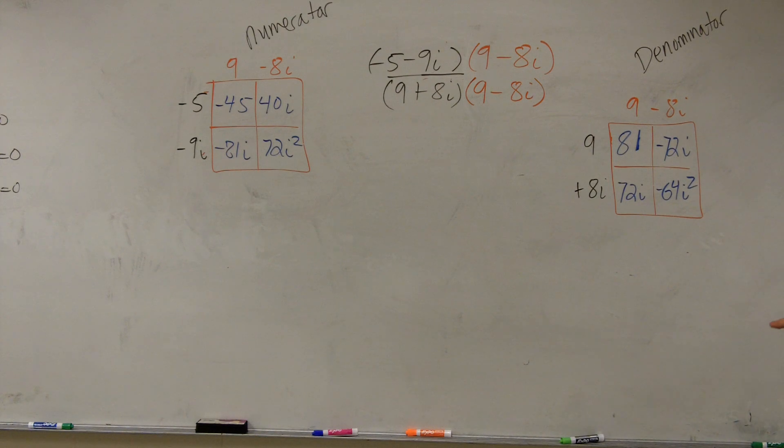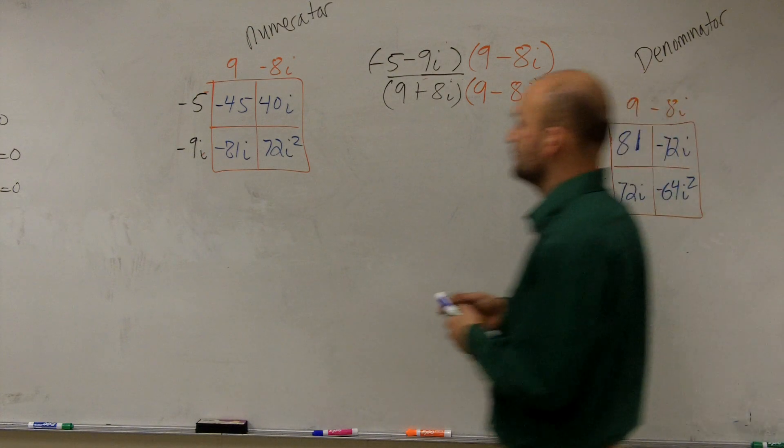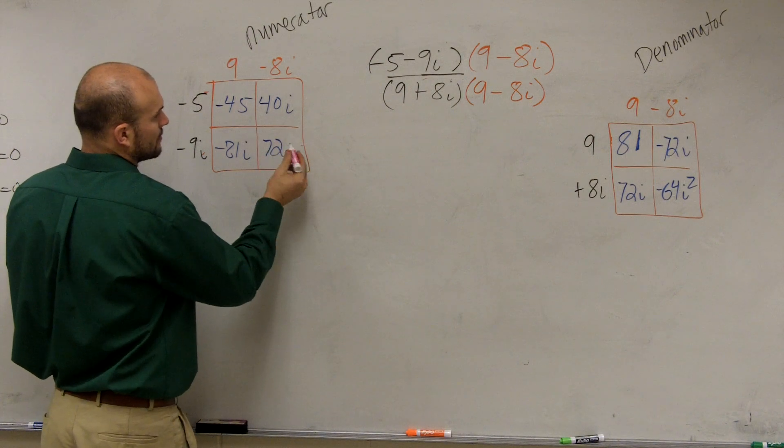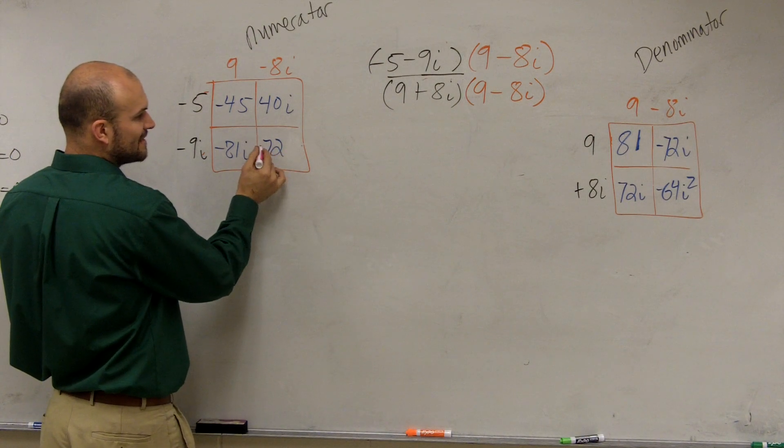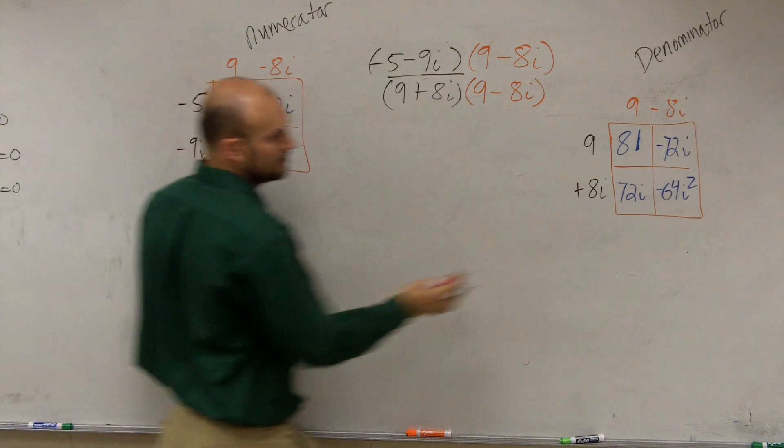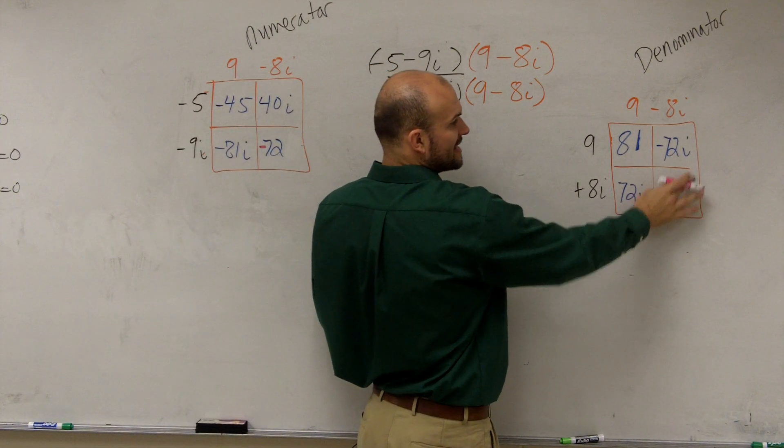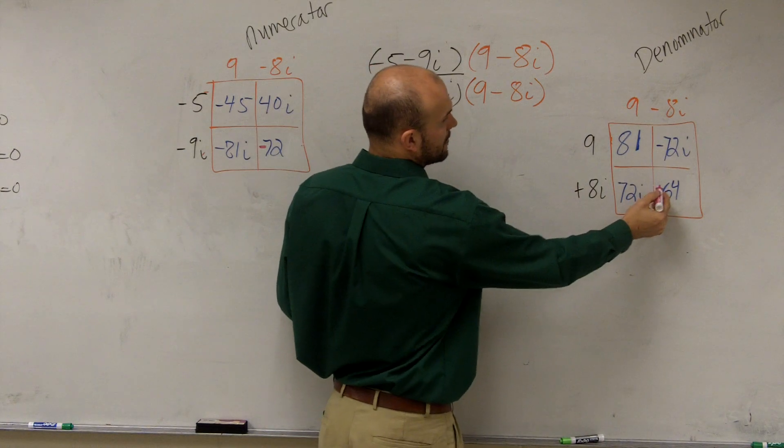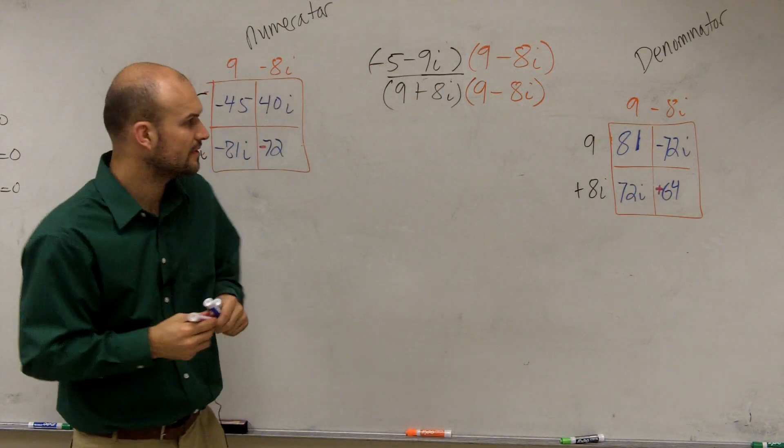Yes. And then remember, what is i squared again? Negative 1. So what we can do is we can now replace this with a negative 1. Well, negative 1 times 72 just becomes negative 72. This is now a negative 64 times negative 1. It's now going to become a positive 64. Does anybody see how I did that kind of in step? Yeah.